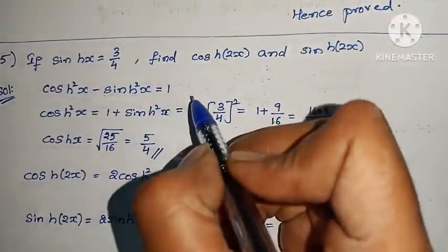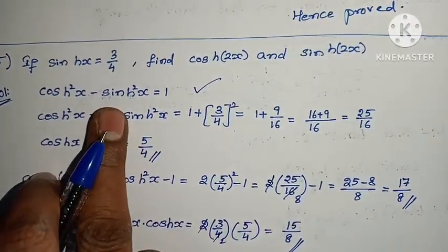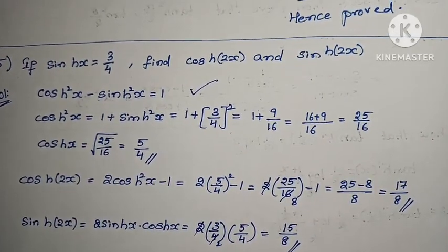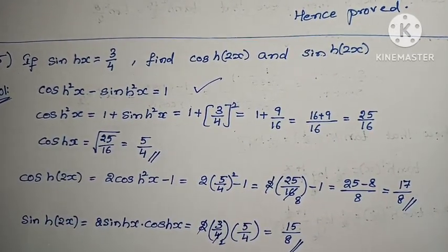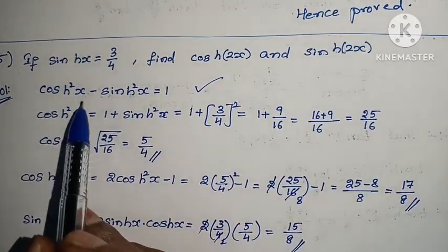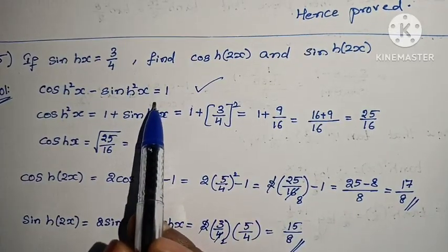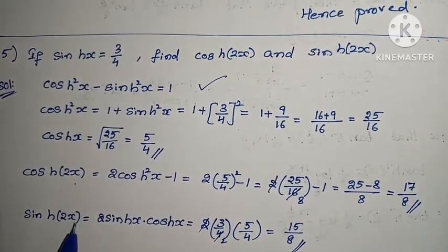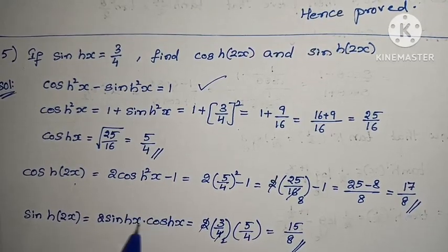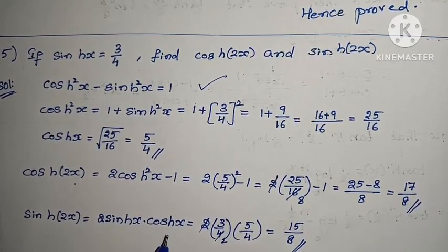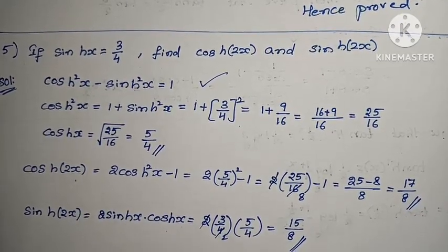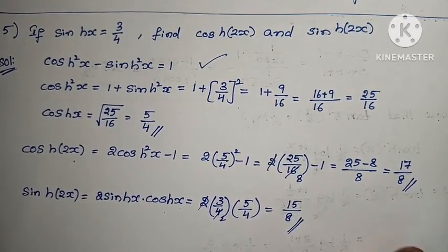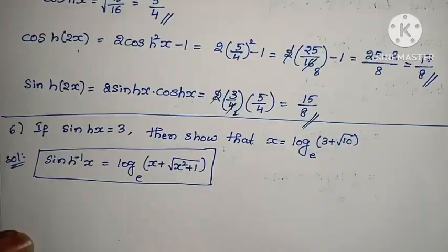Very easy. The hyperbolic identity cosh²(x) − sinh²(x) = 1 is very important. If you use this, cosh(x) leads to cosh(2x) and sinh(2x). Same trigonometric formulas apply to hyperbolic functions — just substitute the value of h. Next problem: if sinh(x) = 3, show that x = log(3 + √10).